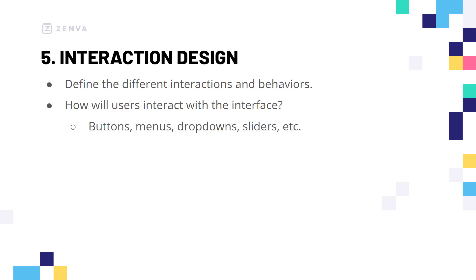Interaction design is where we nail down what each interaction or the different types of interactions are in our interface — basically how the user can interact with it. Everything from buttons to menus to drop-downs to sliders needs to be documented, because once we send this off to the people who are actually going to be implementing this in software, they need to know: where does this button go? What does this slider adjust? What happens if the user drags down from the top of the screen — is that going to refresh or pull down a drop-down menu? Every single interaction that can happen with your interface needs to be defined.